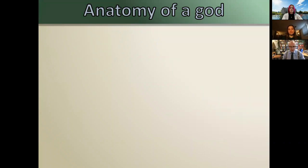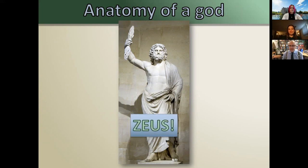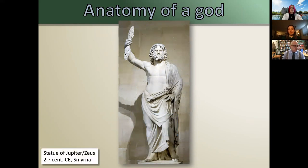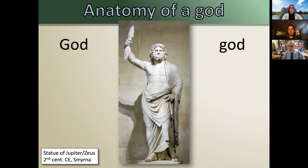We're going to talk about the anatomy of a god — what is it about a Greek and Roman god that makes them a Greek or Roman god? To do this we need a god, so let's call him Zeus. There's a statue in Smyrna in Asia Minor — that is Jupiter slash Zeus, depending on whether you want to use his Roman or Greek title. Now if we're calling this figure a god, we need to establish some terminology.